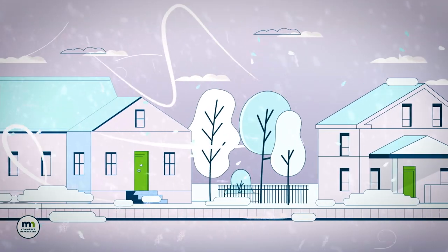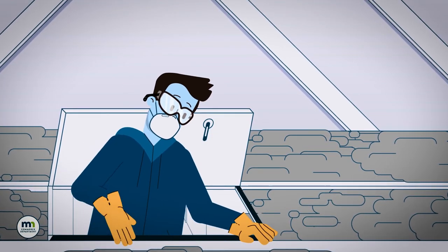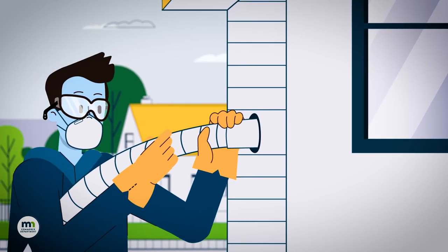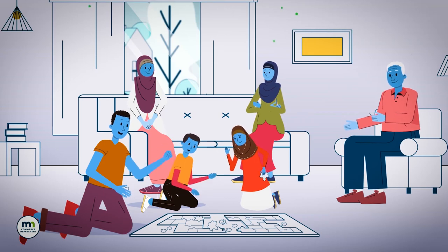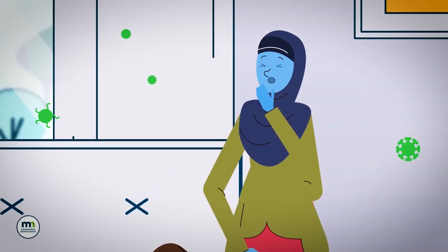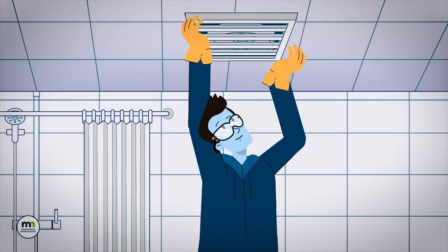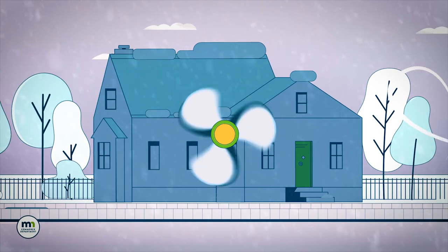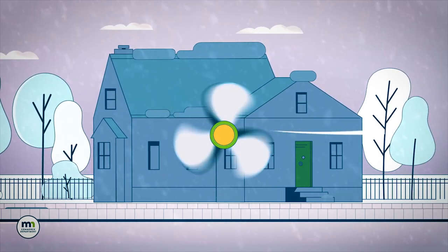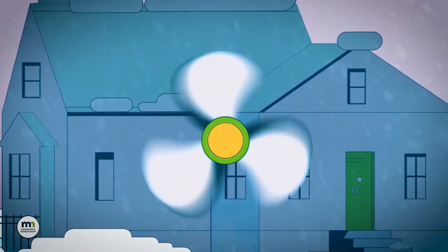When a home has been well sealed and insulated, there's little air leakage, and that's a good thing. But while we're sealing everything up, we don't want to sacrifice air quality. So we may install controlled ventilation by adding a continuously running fan, usually in a bathroom. This keeps the air moving throughout the home and helps keep moisture levels balanced.